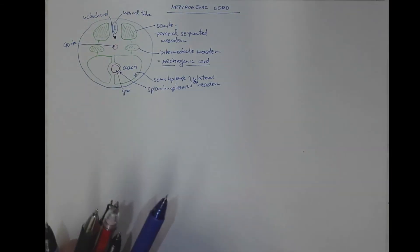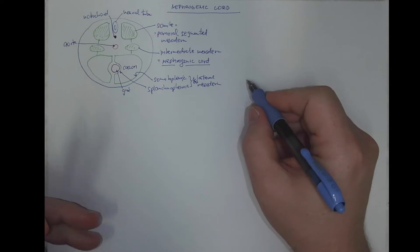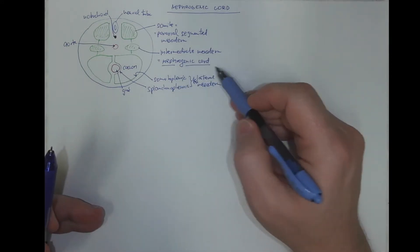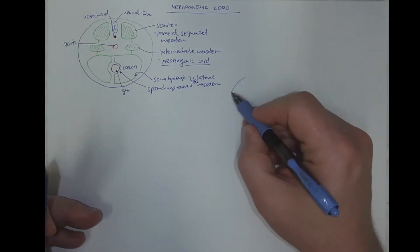Now in the longitudinal section to the human embryo, you would see the segmentation of the nephrogenic cord.